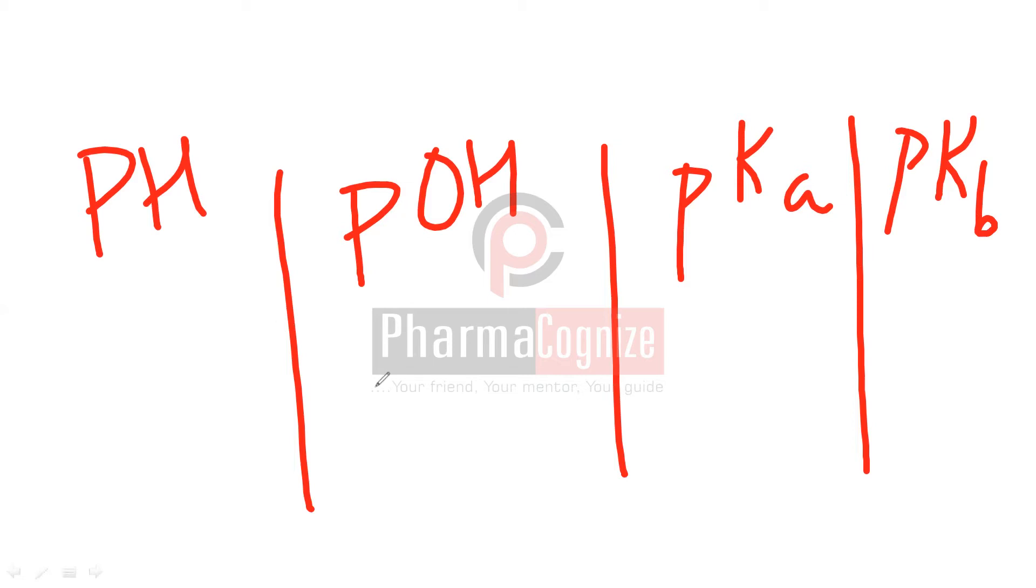Whenever there is a term P in starting of any calculation like pH, pKa, pKb, pOH, in that case if you want to equate it to something it would be minus log. So P represents minus log and the term after that is in bracket.